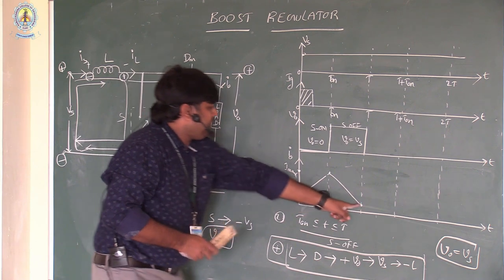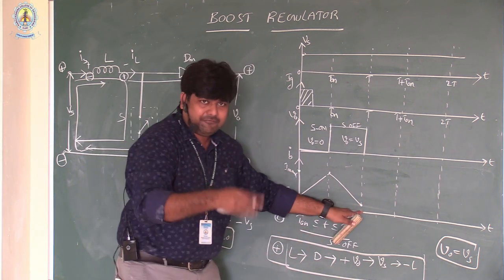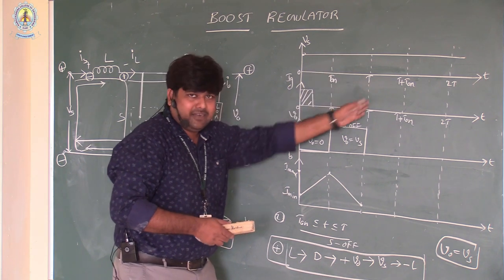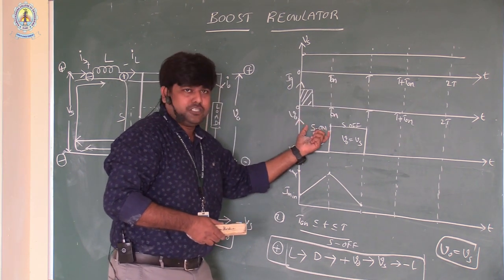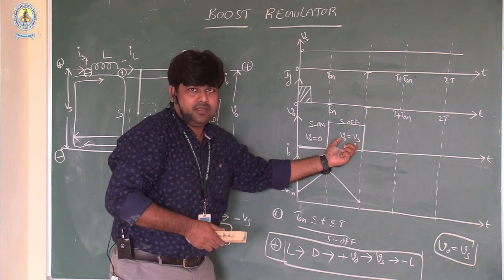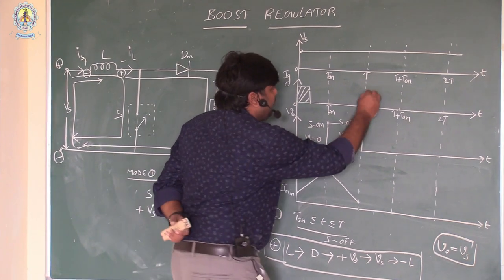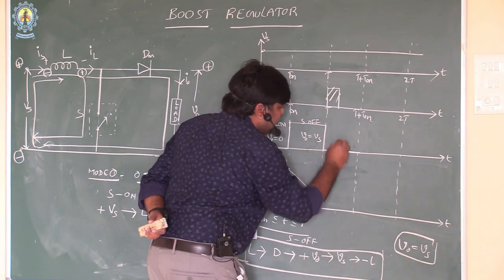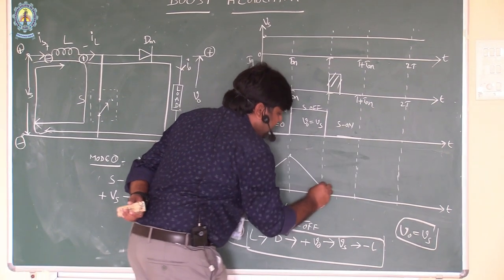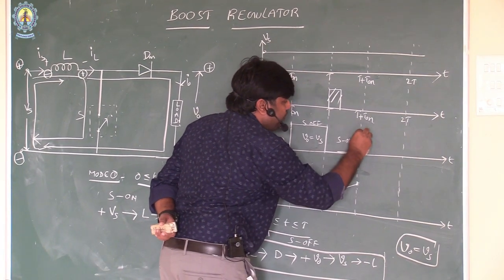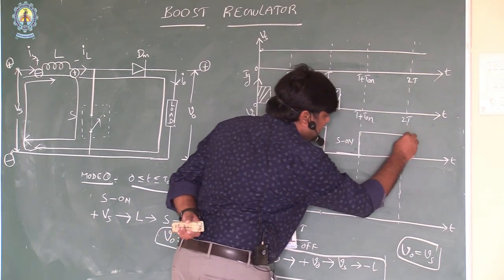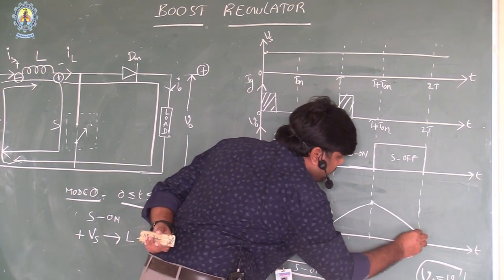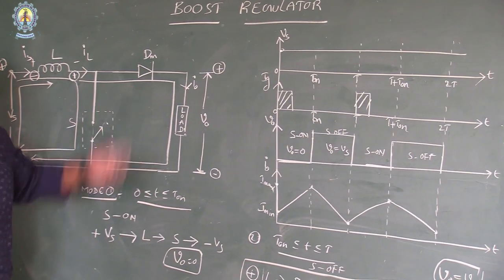After the total period T is completed, the cycle is repeated. The total operation divides into two modes: during Mode 1 the switch is on, during Mode 2 the switch is off, and then the same cycle repeats. This is called a boost regulator. Without using a transformer — which is normally used to step up or step down voltage — the voltage is stepped up using a single switch, which is why the efficiency is very high.